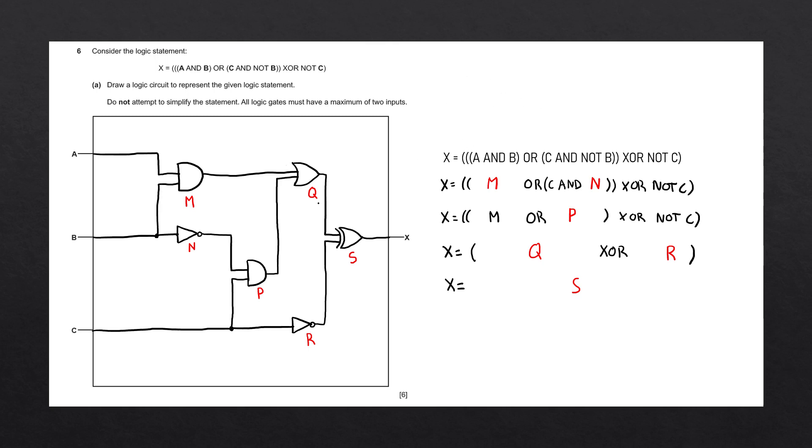And there we have it. Now, these labels can be used for the truth table for the next question and can be erased if you'd like. Otherwise, you won't get marked down if they're left on your logic circuit.